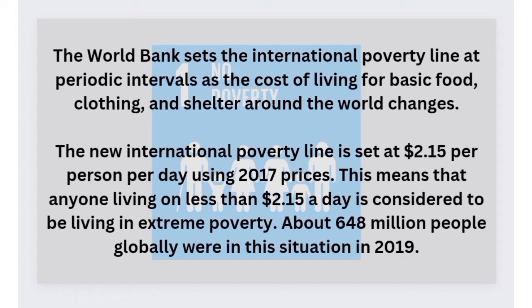That's called the International Poverty Line. The poverty line is the minimum level of income deemed inadequate to meet basic human needs, which are food, shelter, water, drinking water, clothing, sanitation, education, healthcare, and information. This definition was given by the UN Declaration at the World Summit on Social Development.